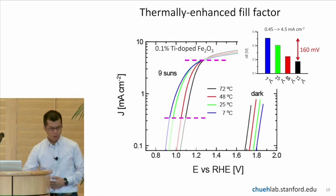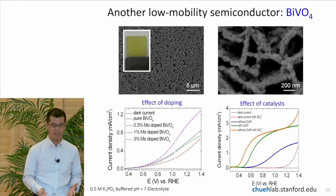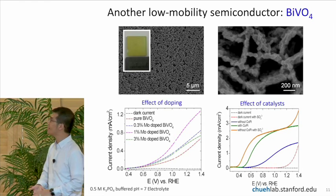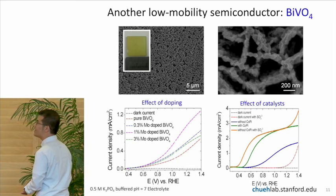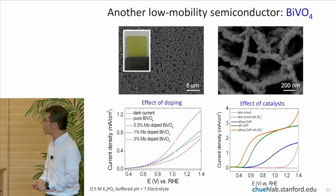much improved mobility of the minority carrier in iron oxide. So we're better able to separate the charge and that's leading to a much faster rise of the current with voltage. So that's the first material we looked at. The second material we looked at, which also turns out to be one of these low mobility semiconductor, is bismuth vanadate. This is being a material that's heavily investigated in GCEP programs and elsewhere.